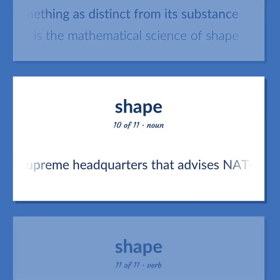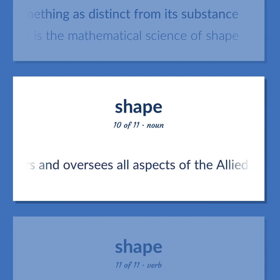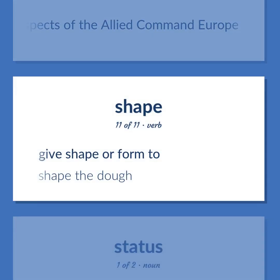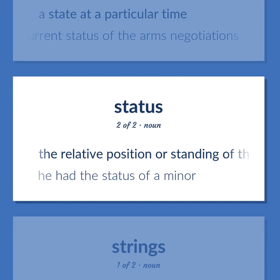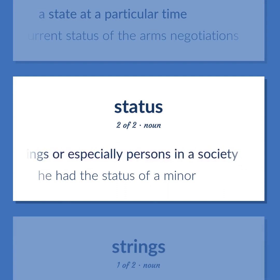Shape: SHAPE — the supreme headquarters that advises NATO on military matters and oversees all aspects of the allied command Europe. Give shape or form to — 'Shape the dough.' A state at a particular time — the current status of the arms negotiations. Status: the relative position or standing of things or especially persons in a society — 'He had the status of a minor.'